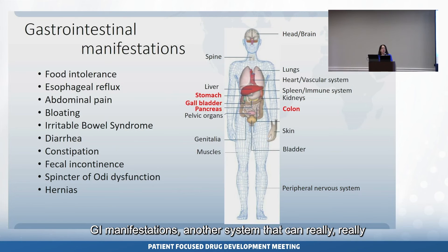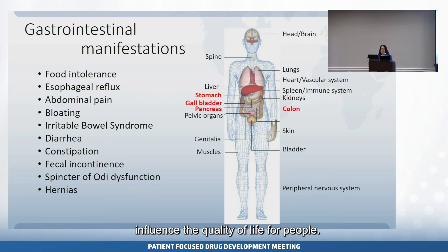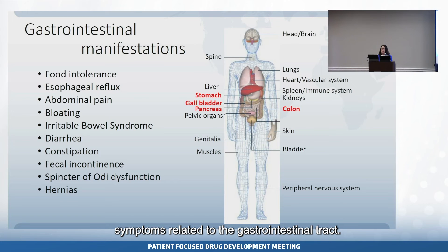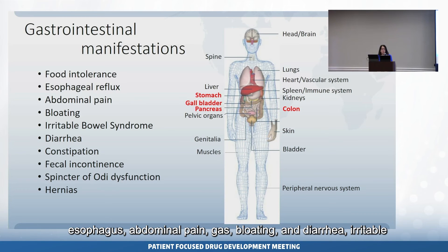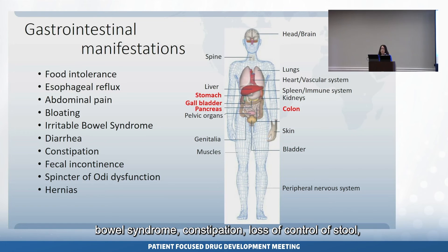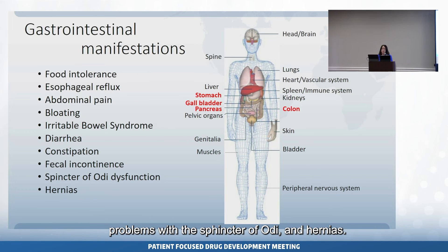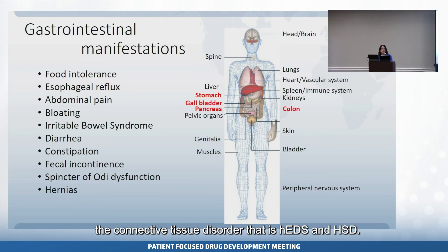GI manifestations are another system that can really influence quality of life. Patients run a wide range of symptoms related to the gastrointestinal tract. Many people report food intolerance, reflux in the esophagus, abdominal pain, gas, bloating, and diarrhea, irritable bowel syndrome, constipation, loss of control of stool, problems with the sphincter of Oddi, and hernias. All of these things can be related fundamentally to the connective tissue disorder that is hEDS and HSD.